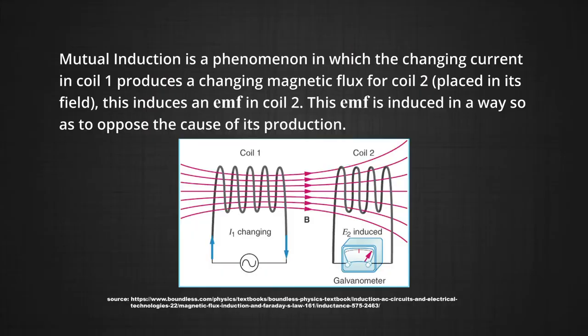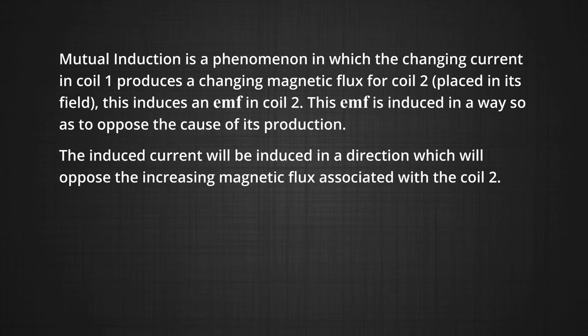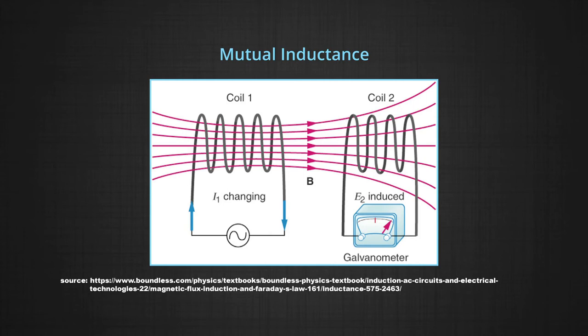Let us consider the case in which electric current can be induced in a coil by flux change produced by another coil in its vicinity. This is called mutual inductance. Mutual induction is a phenomenon in which changing current in coil 1 produces a change in magnetic flux of coil 2 placed in its field, which induces an EMF in coil 2. This EMF is induced in a way so as to oppose the cause of its production. The induced current will be induced in a direction which will oppose the increasing magnetic flux associated with coil 2. In this model, AC current in coil 1 varies the magnetic flux associated with coil 2, inducing an EMF in coil 2. This is mutual induction.